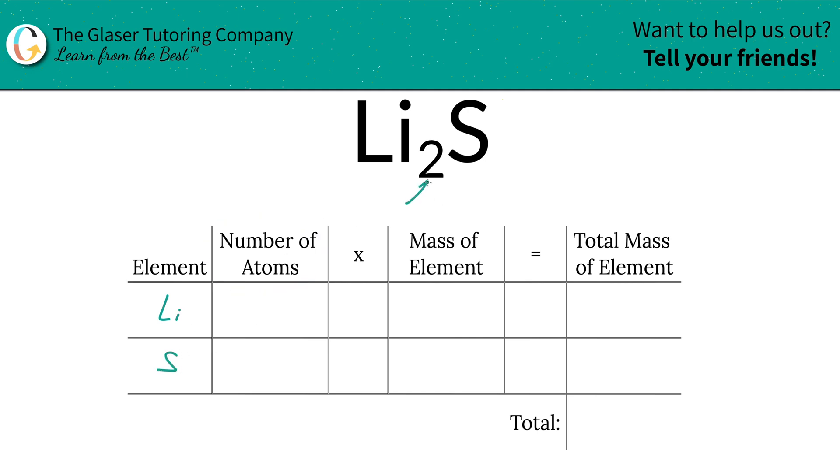Next is to write down the number of atoms, that's where the subscripts come into play. That's what they tell you, the number of atoms of each, or the number of moles, depending upon your perspective. But for this problem, it doesn't really make a difference.